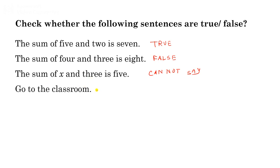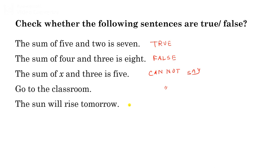Now look at another sentence: 'Go to the classroom.' This is an order — again we cannot say whether it is true or false. Next: 'The sun will rise tomorrow.' This is a situational sentence. If you are in a certain place it may be true, but if you travel to a country in a different time zone, you may see sunset instead. So you cannot say exactly whether it is true or false. So these last three sentences fall into the 'cannot say' category.